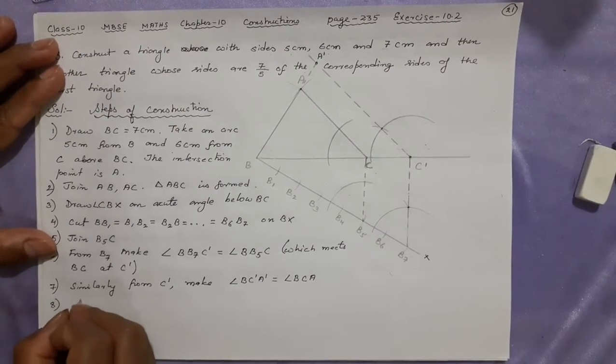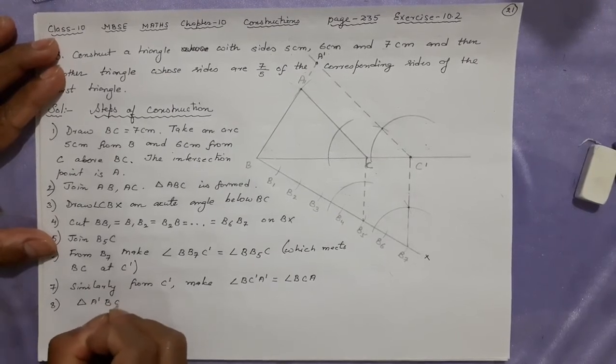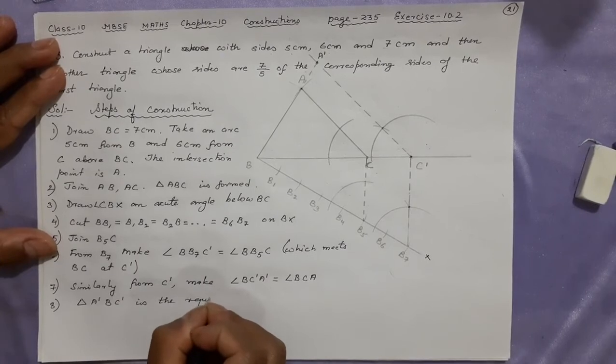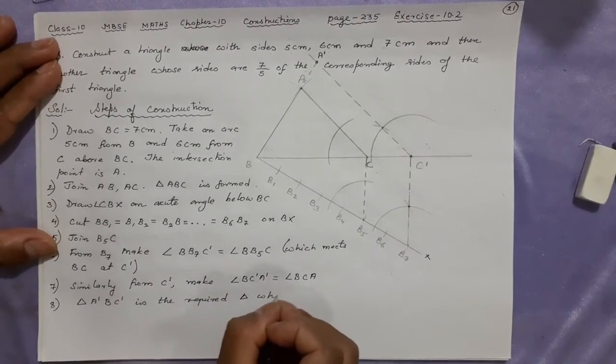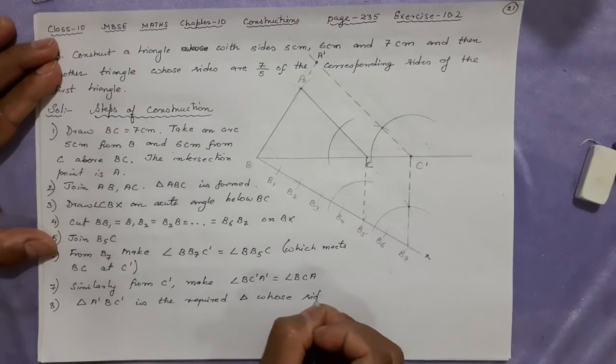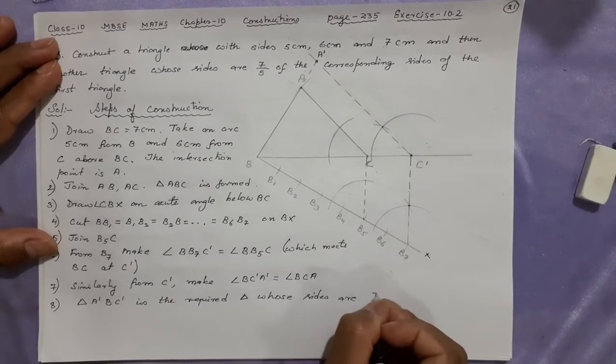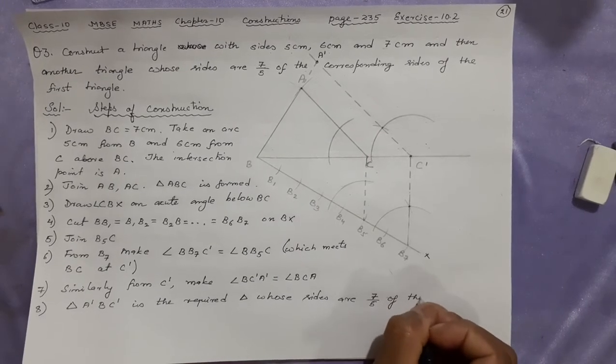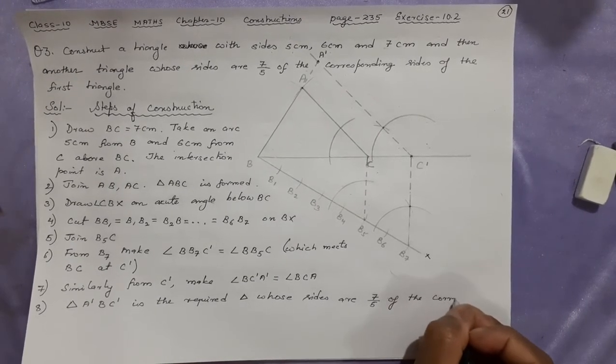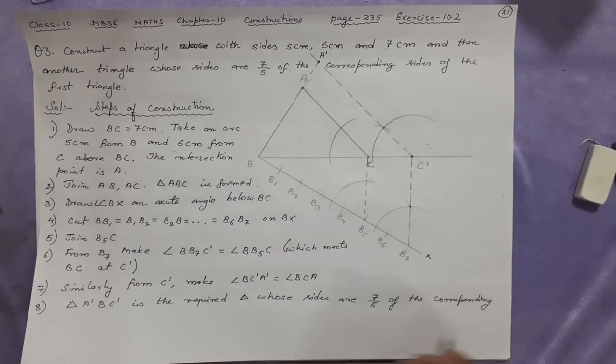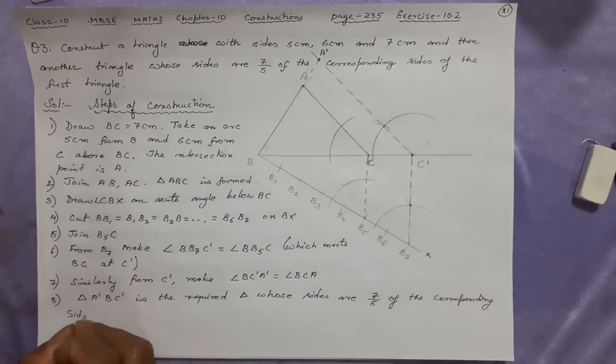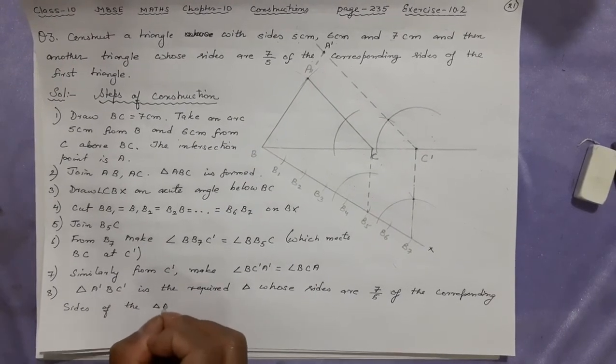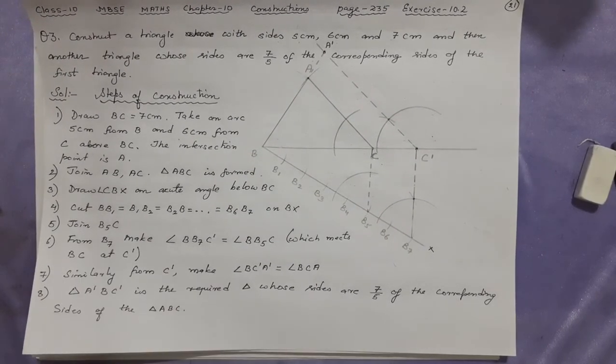Triangle A dash B C dash is the required triangle whose sides are seven by five of the corresponding sides of the triangle ABC which is that first triangle. Thank you.